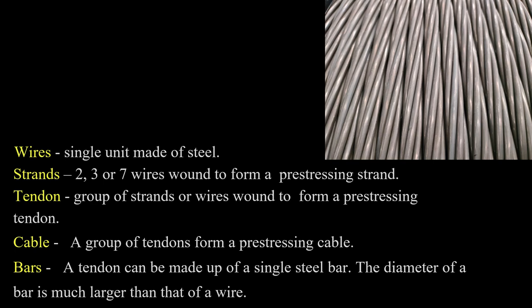The next terminology is tendon — a group of strands or wires used to form a pre-stressing tendon. A cable is a group of tendons forming a pre-stressing cable. Bars are a tendon made of a single steel bar with a round circular section; the diameter of this bar is much higher than that of the wire, so the wire would also be more flexible than the bar.